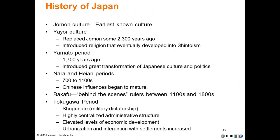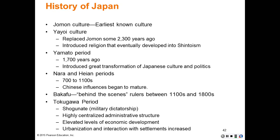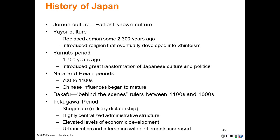History of Japan. The Jomon culture is the earliest known culture. The Yayoi followed and replaced the Jomon some 2,300 years ago. The Yayoi culture introduced religion that would eventually develop into Shintoism. The Yamato period was about 1,700 years ago and introduced great transformation of Japanese culture and politics. The Nara and Heian periods are from 700 to the 1100s AD, when Chinese influences began to mature.